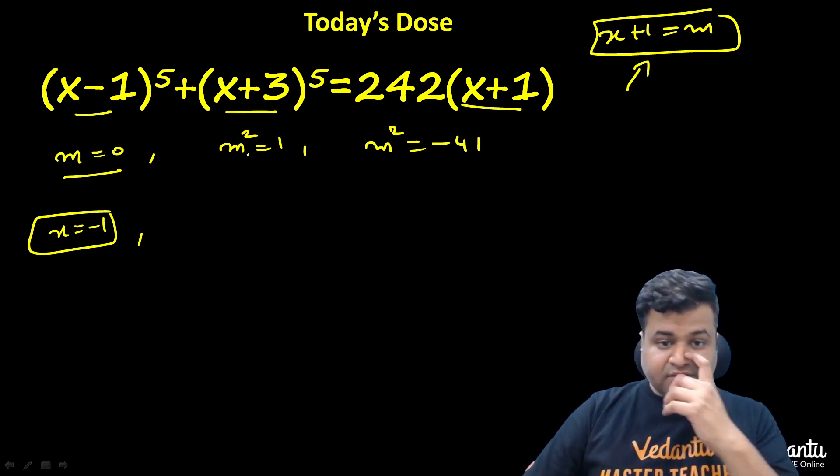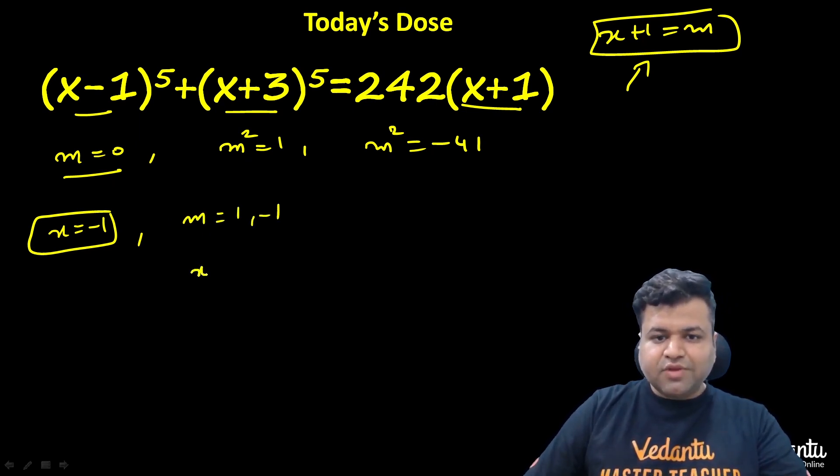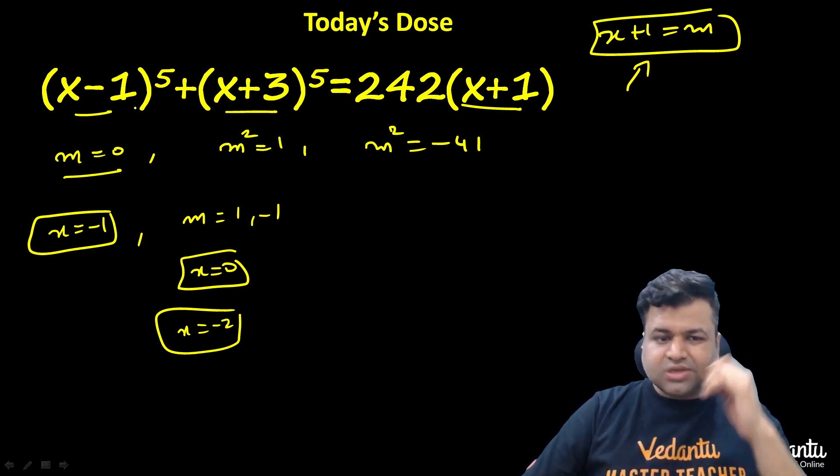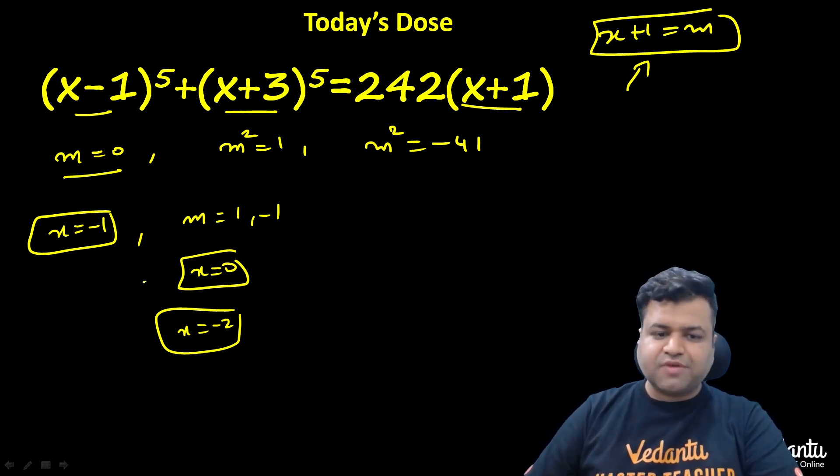Next, when m^2 is 1, that means m can be either plus 1 or minus 1. If m is 1, then x will be 0. If m is minus 1, then x will be minus 2. These are two more solutions for this question. You can check: if x is 0, this is minus 1 plus 3 raised to power 5, which is 243. And this is 242, so 243 minus 1 equals 242. This is a perfect solution. Same with x equals minus 2.